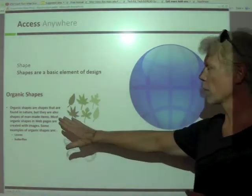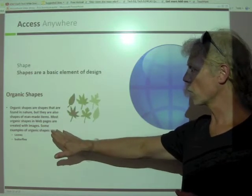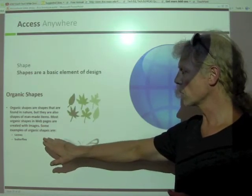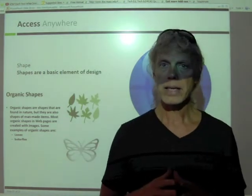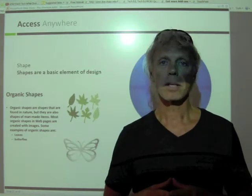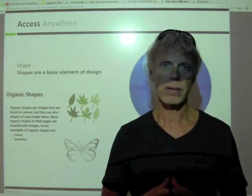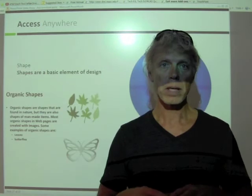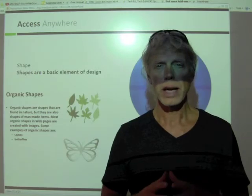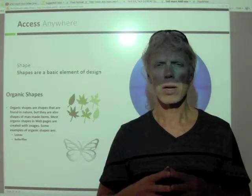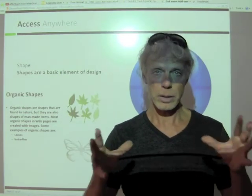Organic shapes are shapes that are found in nature, but they are also shapes of man-made items. Most organic shapes in web pages are created with images. Some examples are leaves and butterflies. Any time you place an image in your design, most of the time there is a shape associated — the outline of that image. Understanding what that shape does to your page and your overall design is very important. You have to ask yourself how it works with other shapes, either defined by lines or fonts, on that particular piece of work.